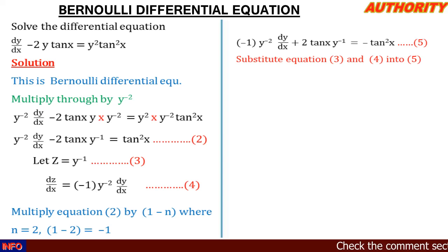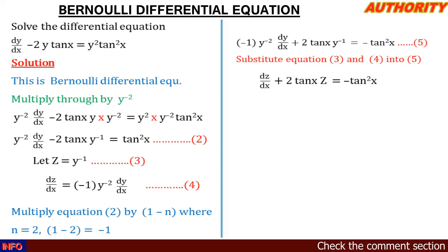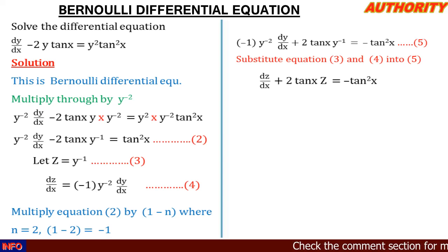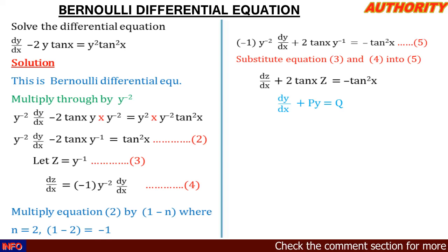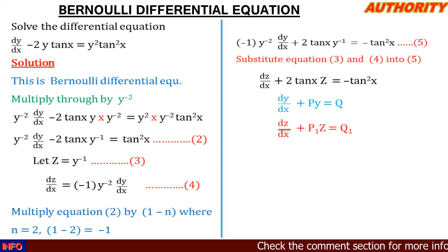Now we substitute equations 3 and 4 into equation 5. Where we had minus y⁻²·(dy/dx), we replace it with dz/dx. In place of y⁻¹ we put z. This gives us: dz/dx plus 2·tan(x)·z equals minus tan²(x). Looking at this carefully, it looks like a linear differential equation of the form dy/dx + P·y = Q.